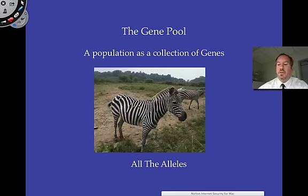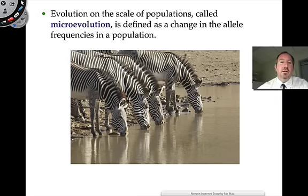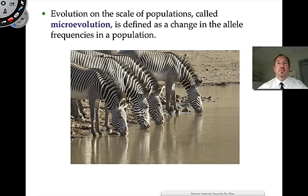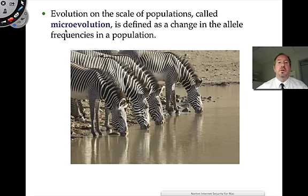One way to measure whether a population is evolving is if that allele frequency is changing from one generation to the next, because that tells you some kind of change is occurring over time — and that's what evolution is. We call that kind of evolution microevolution. In other words, in a few generations there might be faster zebra, or the striping pattern might be a little different. Micro means small — so microevolution refers to small changes in allele frequencies of a population.